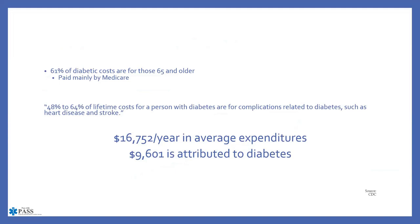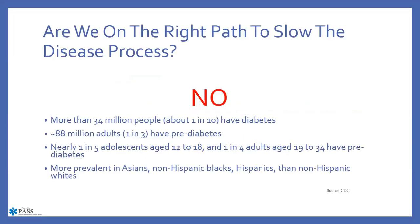61% of diabetic costs are for those 65 and older, paid mainly by Medicare — but we still pay for it through taxes. 48-64% of lifetime costs for a person with diabetes relate to complications like heart disease and stroke. The average annual expenditure for an individual with long-term managed diabetes — including heart disease, stroke, and related complications — is over $16,000, with over $9,000 directly related to the diabetic condition.